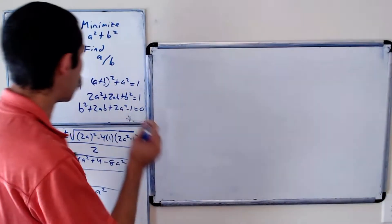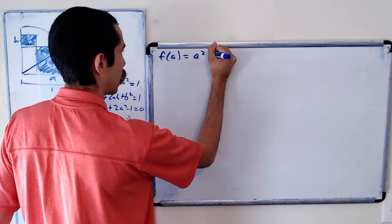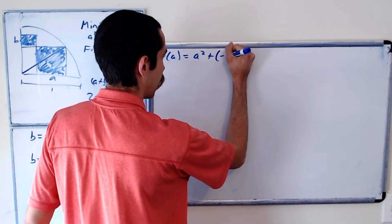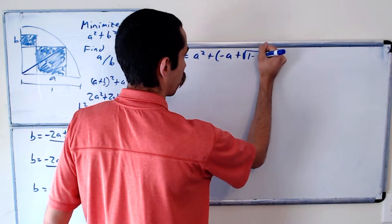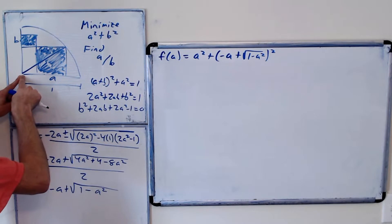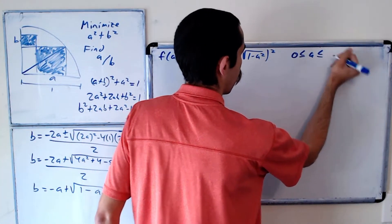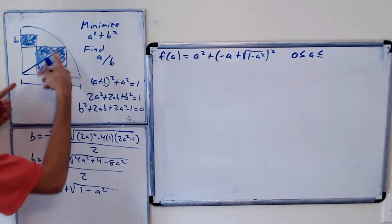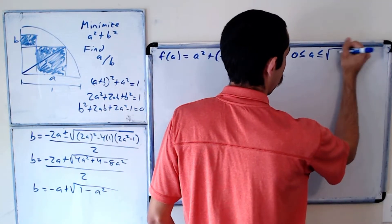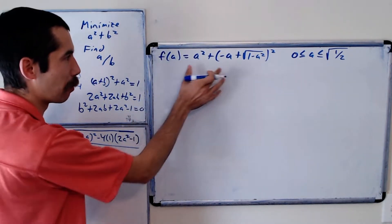Our goal is to minimize f(a) = a² + (−a + √(1 − a²))². The domain is 0 ≤ a ≤ √(1/2), based on the geometry of the figure.